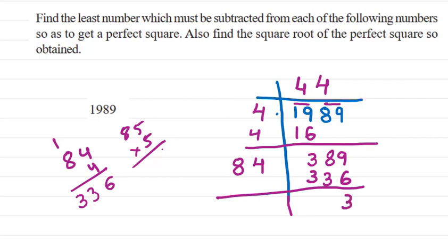After subtracting we got 53. So if we will subtract this 53 from which number? From this number 1989. Then we will get 0 here. So if we subtract 53 from 1989, whatever number we get, that will be the number which will be a perfect square.